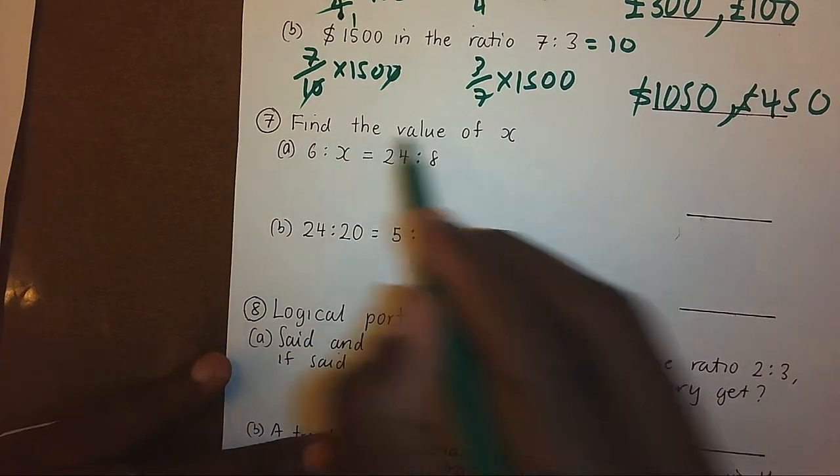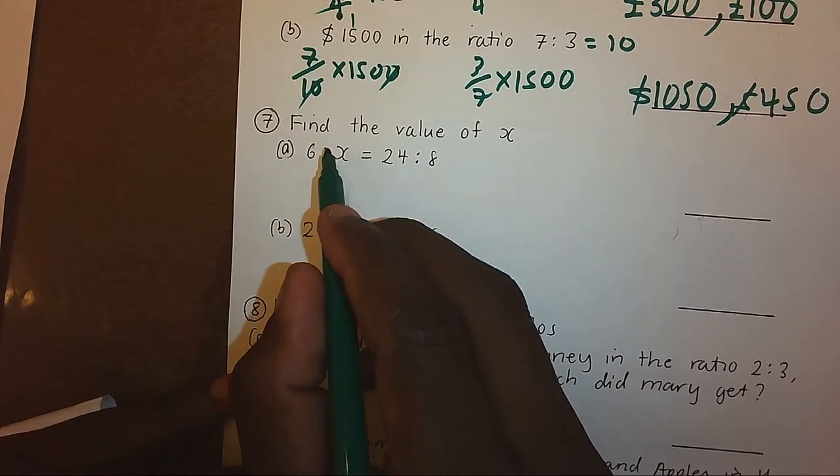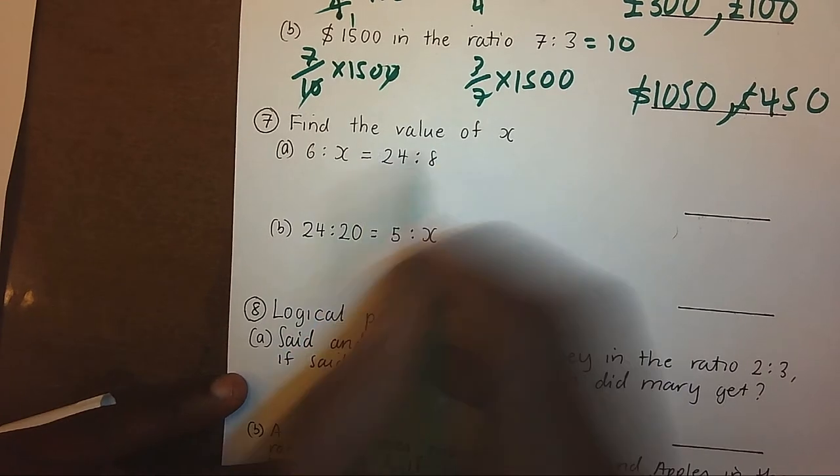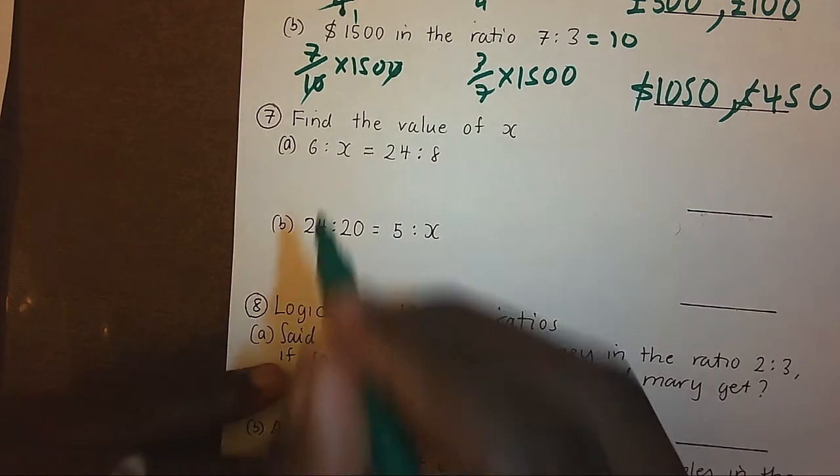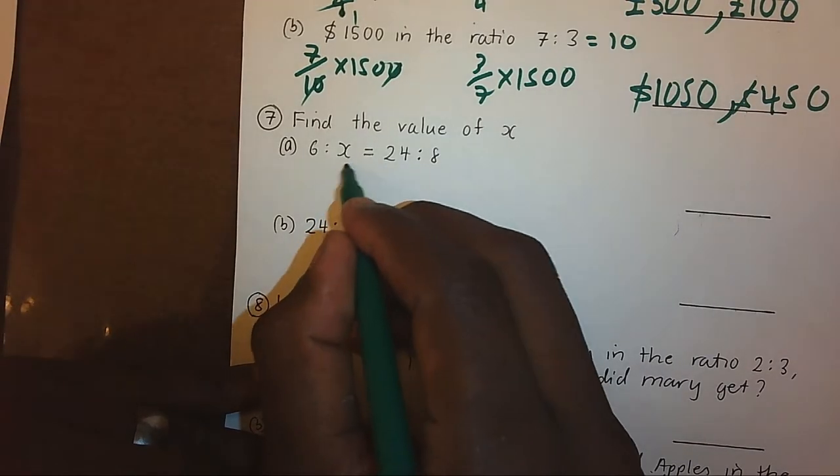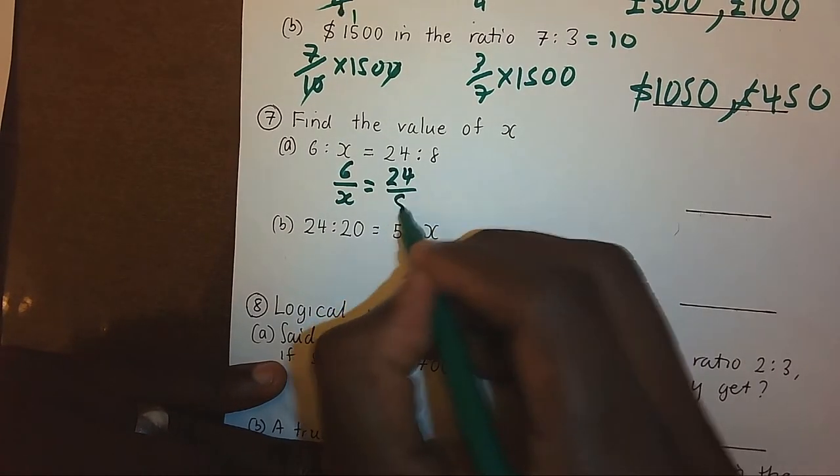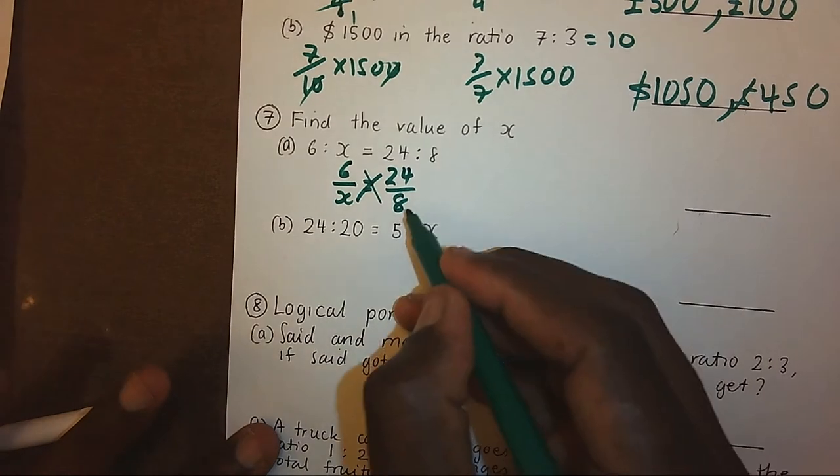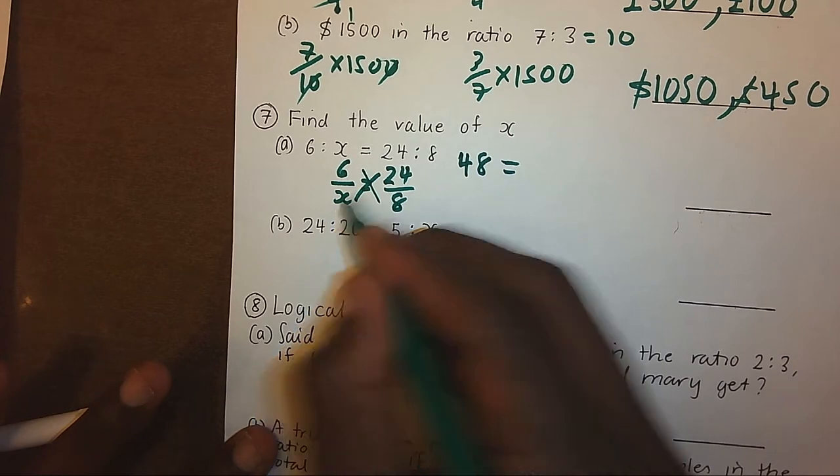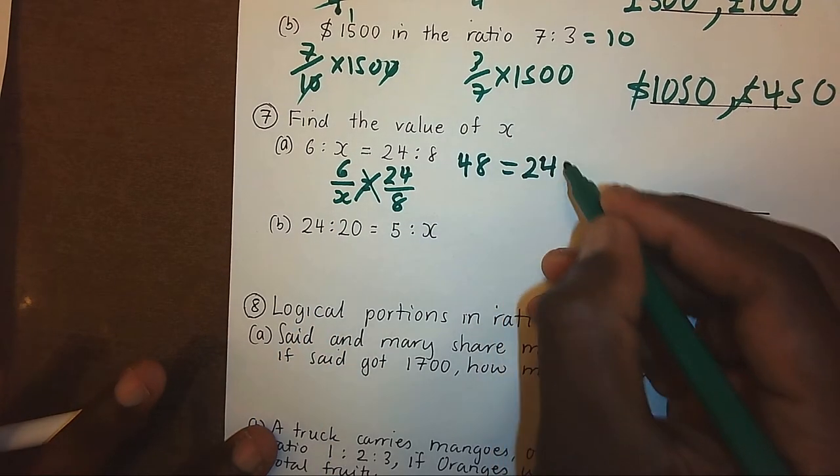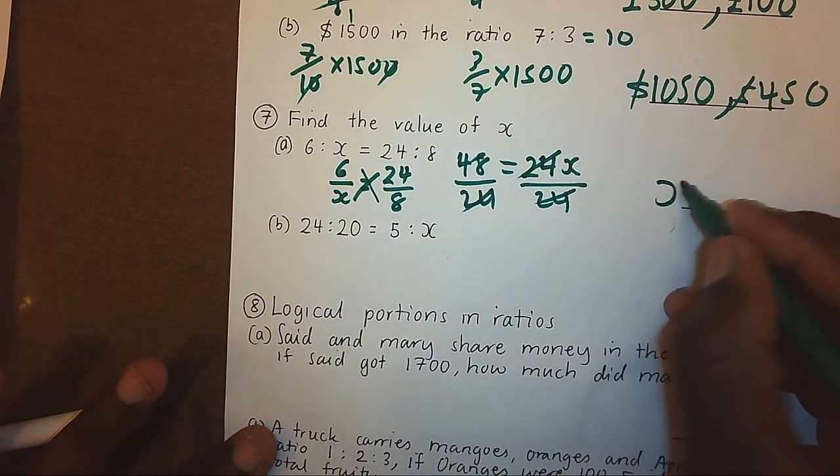Now, here, finding the missing value in the ratio. Note that this ratio is supposed to be exactly as that ratio. In other words, they are equivalent. Let's find the value of x. We can change this into a fraction. 6 times 8, I'll get 48, is equal to x times 24, which is 24x. Divide by 24 on both sides. Clearly, the value of x is 2.